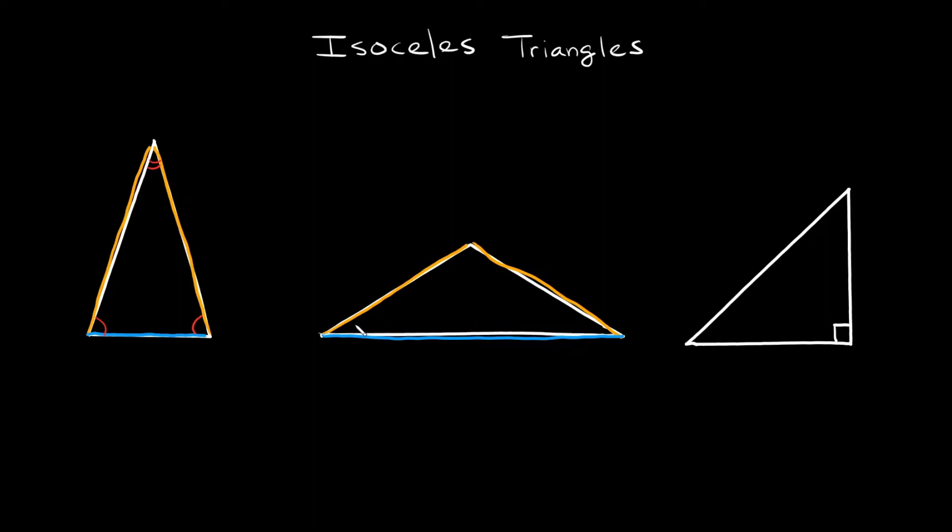The main thing is that you have to have two sides that are the exact same length. And in this case the two angles that are the same would be this one and this one, and then the different one would be this one up here.